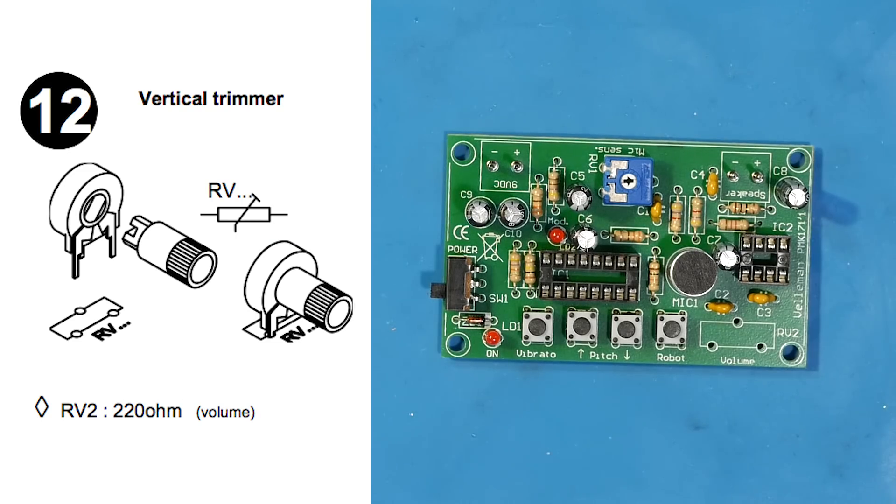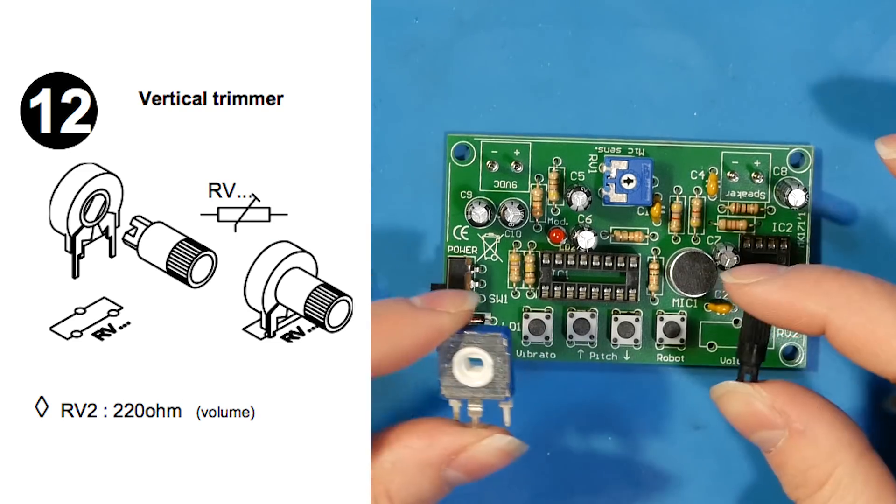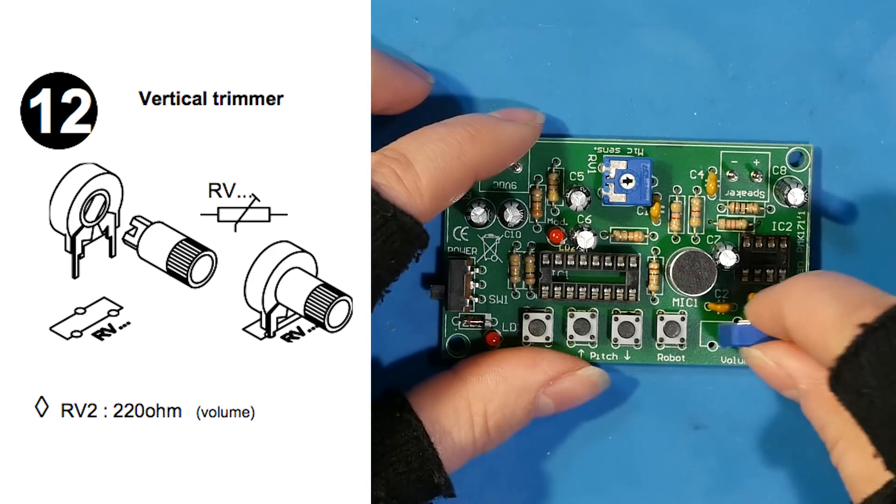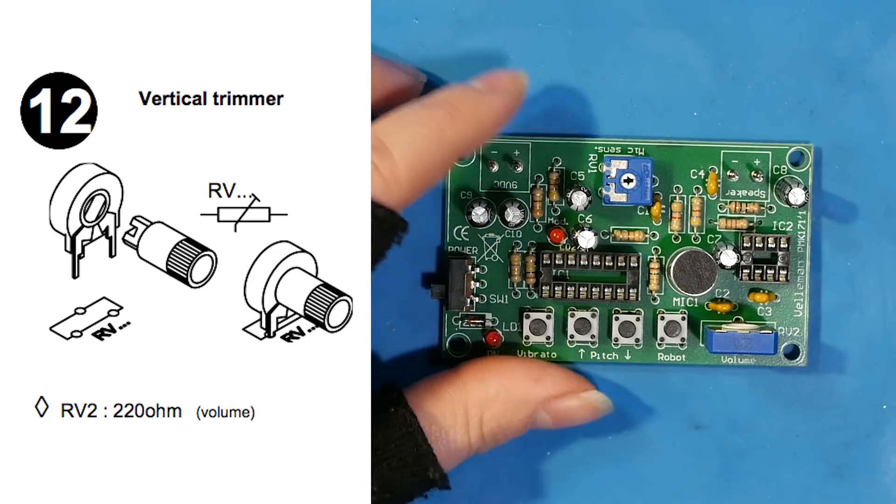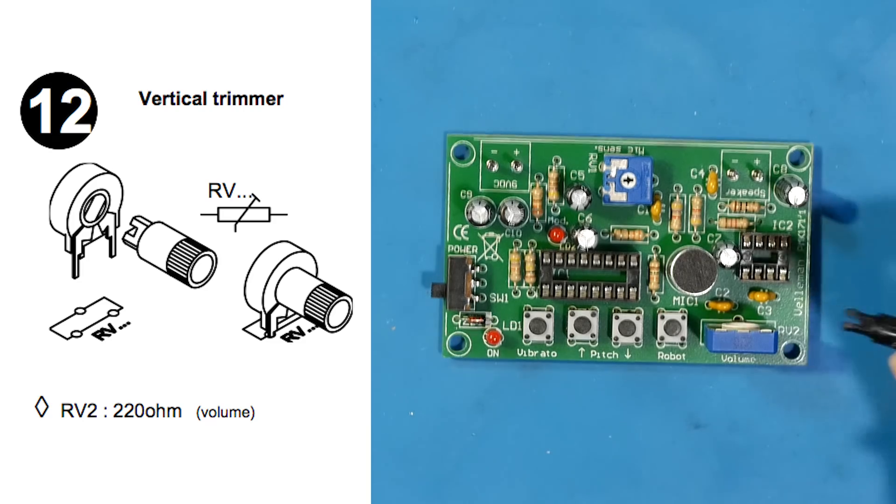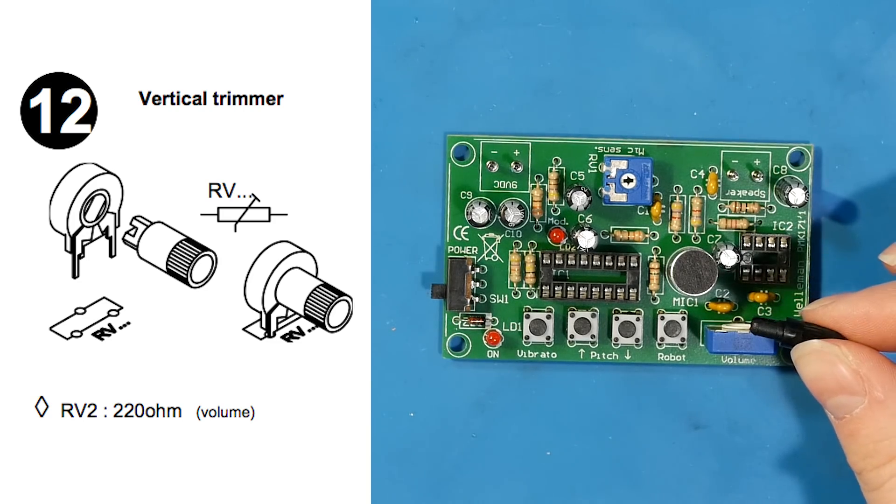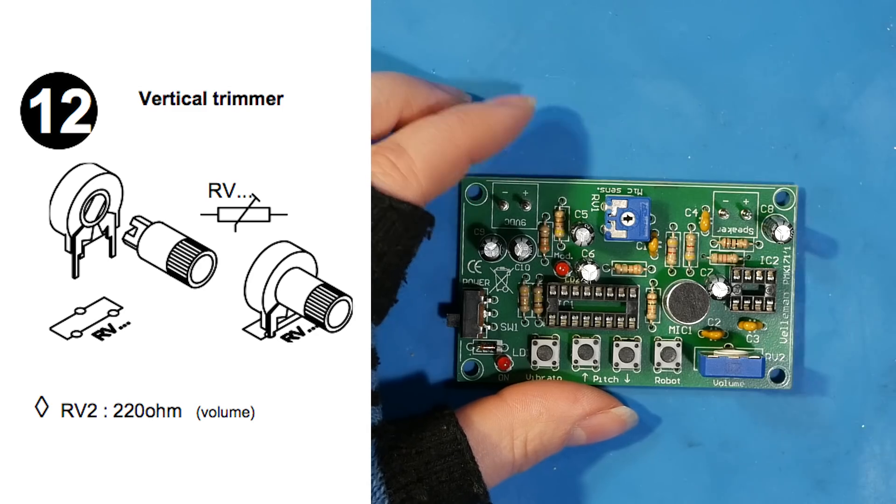In step 12, we add the last solderable component, the vertical trimmer pot. It's going to go over here and control the volume. And once it's in place, we'll need to insert the knob to be able to control the volume. This part is labeled RV2 for variable resistor.